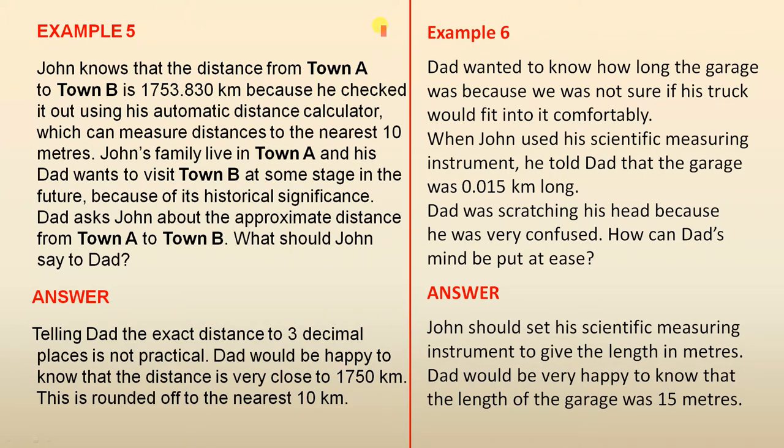John knows that the distance from Town A to Town B is 1,753.830 kilometres, because he checked it out using his automatic distance calculator, which can measure distances to the nearest 10 metres. John's family live in Town A, and his dad wants to visit Town B at some stage in the future, because of its historical significance.